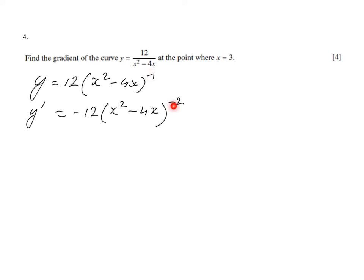Sometimes we make a silly mistake and add actually 1 but it really has to decrease by 1. So minus 1 minus 1 is minus 2. But then the chain rule times the derivative on the inside. So the derivative of whatever is inside those brackets. So that's going to be 2x minus 4.